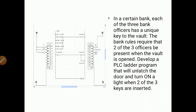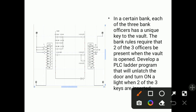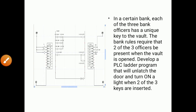Now the next example: in a certain bank, each of the three bank officers has a unique key to the vault. The bank rules state that two of the three officers must be present when the vault is opened. So out of three officers, any two officers should be present and then the vault will get opened.